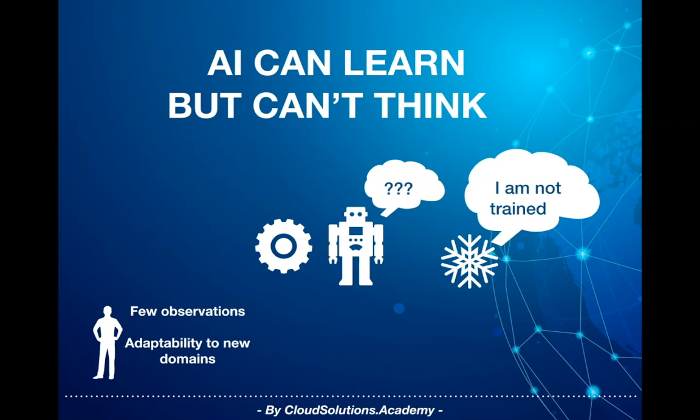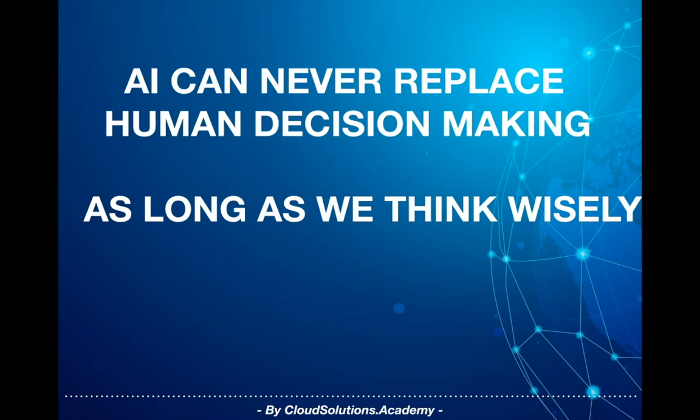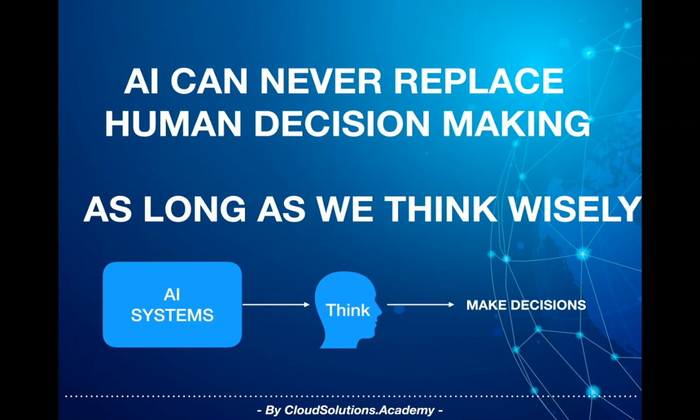Building a generalized system which can understand and learn from various domains will take a lot of time, and the current focus should be on building domain-specific intelligence and getting it right. AI can never be a replacement for human intelligence. While simple to medium outputs of AI can be automated to skip a human expert, the majority of decision making and critical intelligence would always need human intelligence.